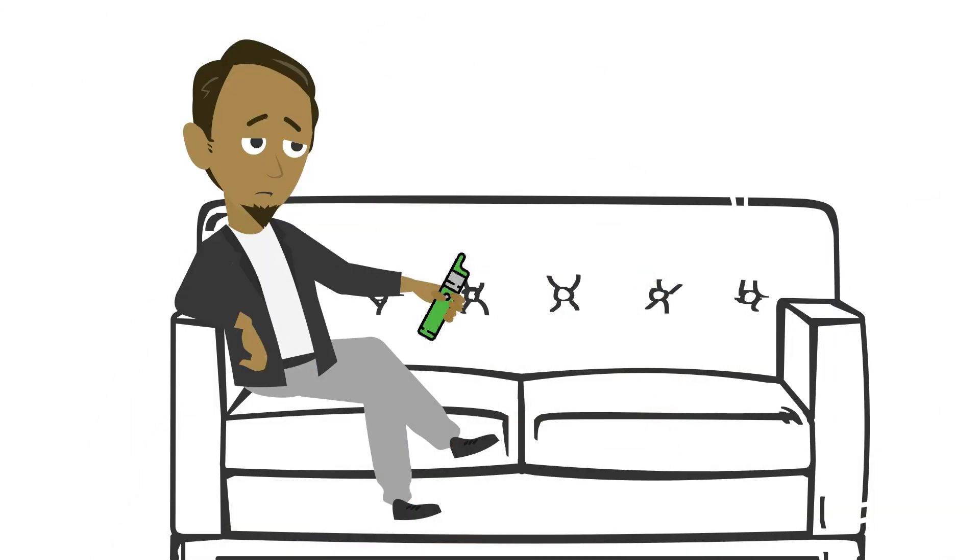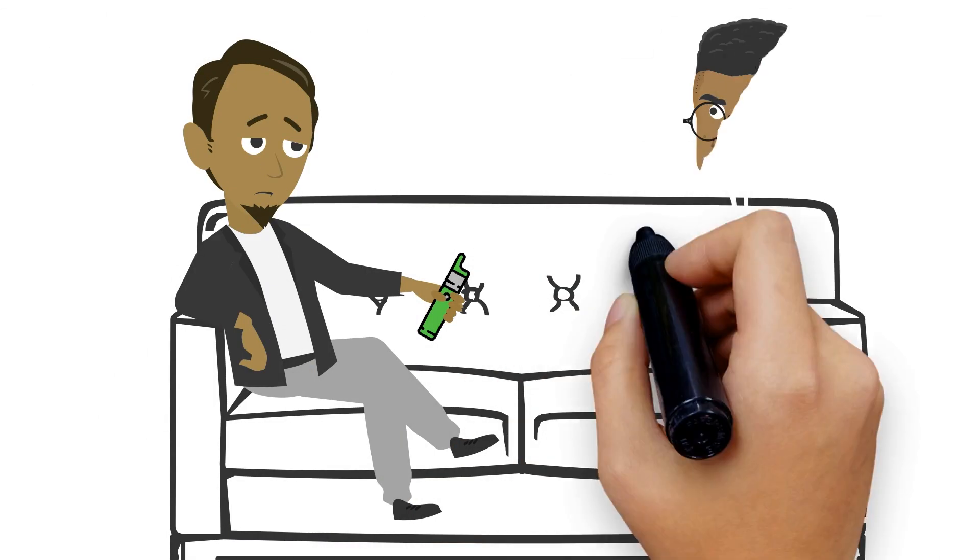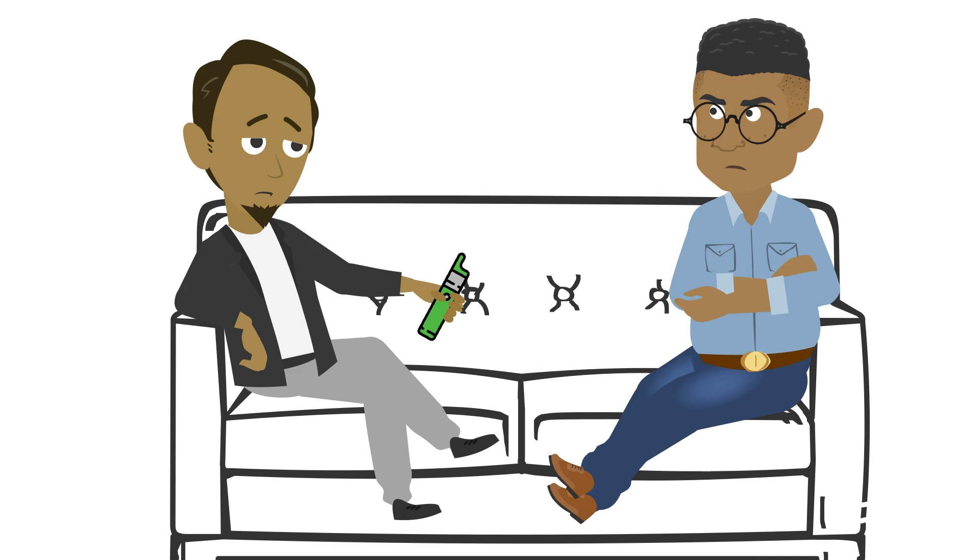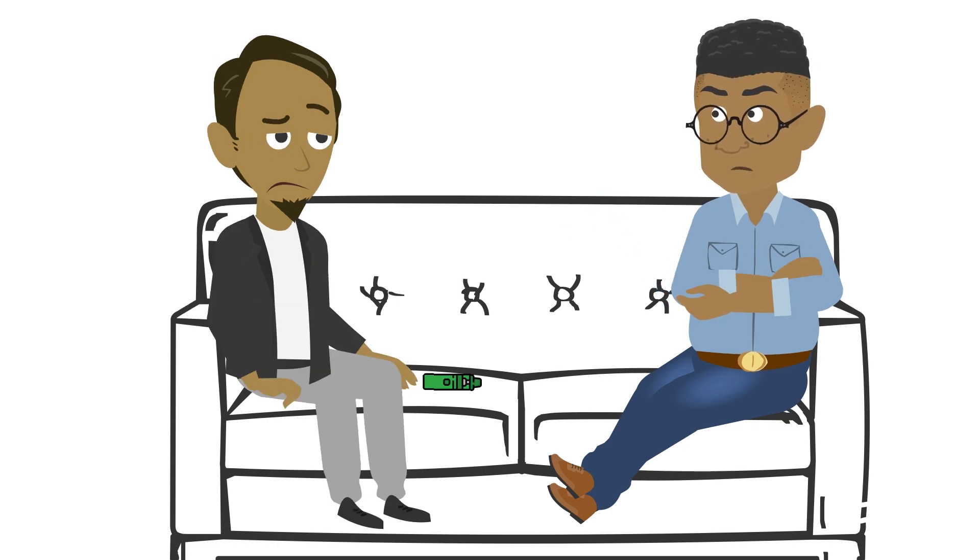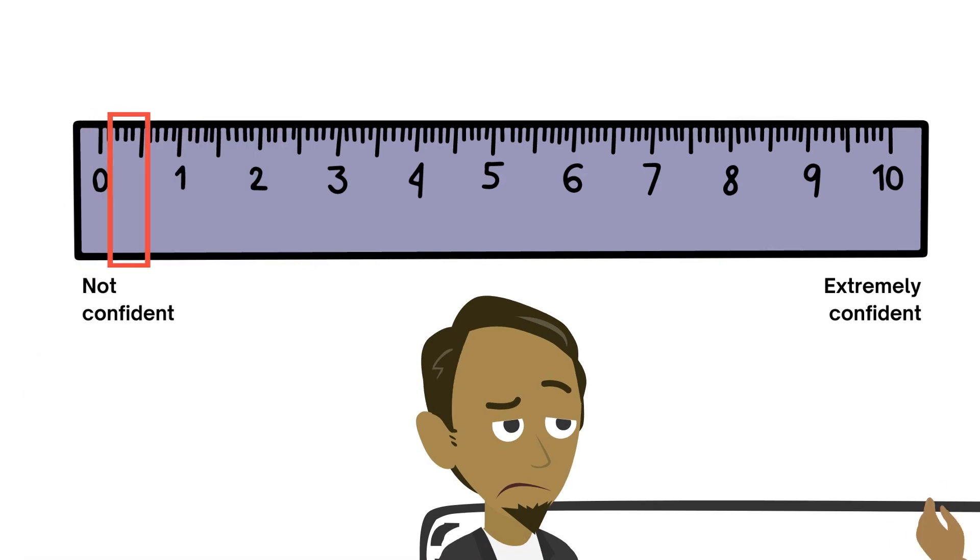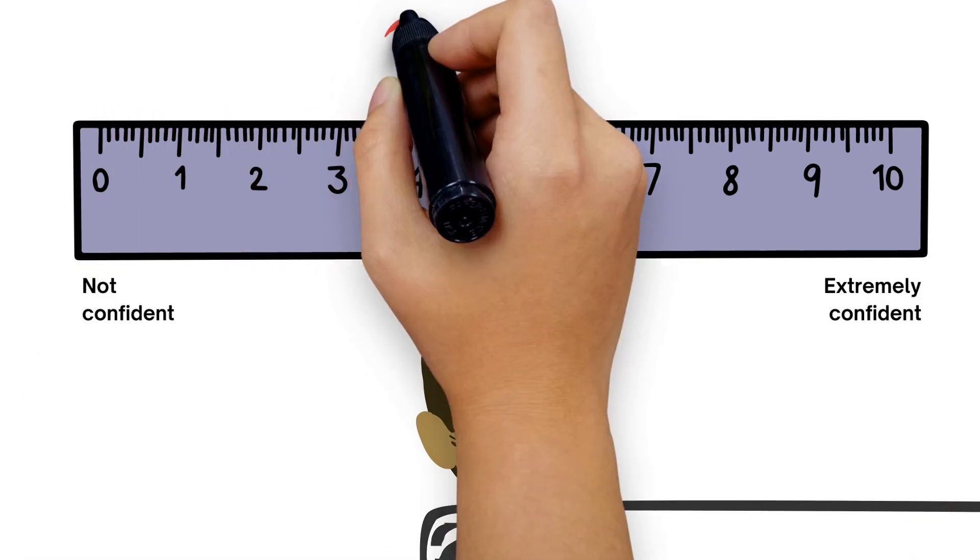Lucas really wants to quit. His new partner is not keen on him vaping and he's been wanting to quit for a while. Lucas has tried quitting before and it was more difficult than he expected. In thinking about his past quit attempts, Lucas rates his confidence level at a 4.